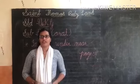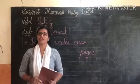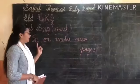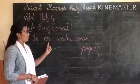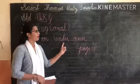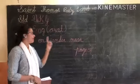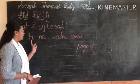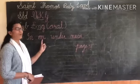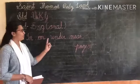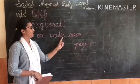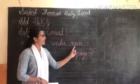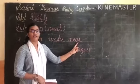Today we are going to learn our new topic: in, on, under, near. In is spelled I-N; on is O-N; under is U-N-D-E-R; near is N-E-A-R.